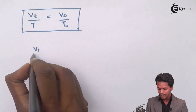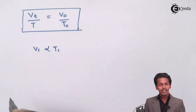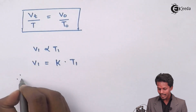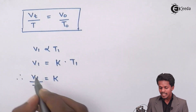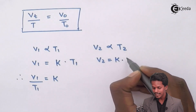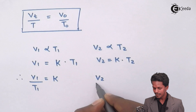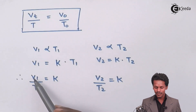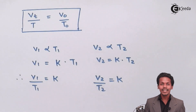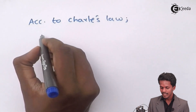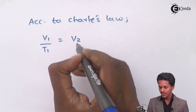As another way to express this: if V1 is directly proportional to T1, then V1 = K × T1, so V1/T1 = K. Similarly, V2 = K × T2, so V2/T2 = K. Since both equal the same proportionality constant K, we can say V1/T1 = V2/T2. This is the standard formula according to Charles's Law.